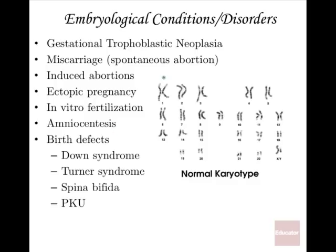Amniocentesis is a test recommended for women in their forties or those with a family history of birth defects. A needle goes into the amniotic fluid through the uterus to withdraw fluid containing skin cells sloughed off by the baby. DNA is extracted, cells can be stimulated to undergo mitosis for more DNA, and then chromosomes are laid out in pairs — a karyotype with 23 pairs. This is a male karyotype because it shows an X and a Y chromosome; XX would indicate female.